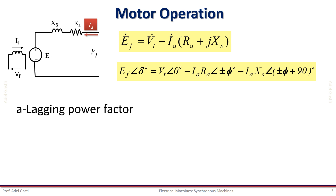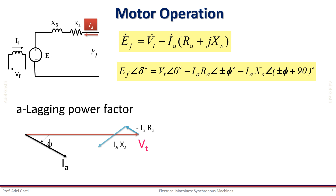Now let's draw the phasor diagram during motoring operation for the lagging power factor case first. As usual we start by drawing the terminal voltage on the horizontal axis, then we draw the current vector considering that it is lagging behind the terminal voltage, then we draw the voltage drop across the armature resistance and the voltage drop across the synchronous reactance. By summing all these vectors as per the above phasor equation, we can obtain the back EMF vector as shown here. Notice that the back EMF is smaller in amplitude than the terminal voltage and has a negative phase angle delta relative to the terminal voltage.